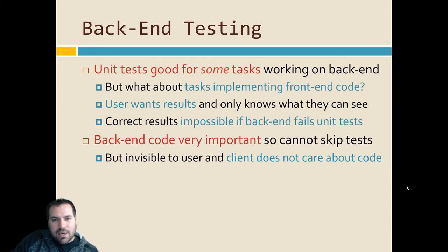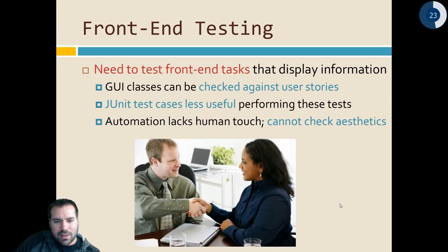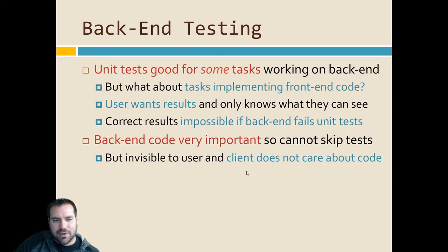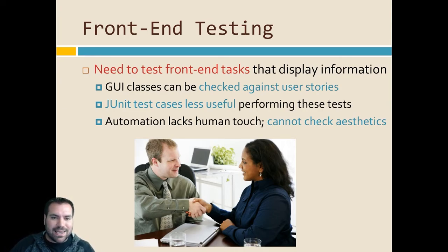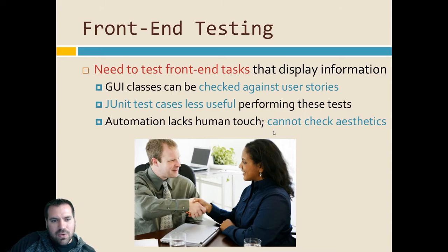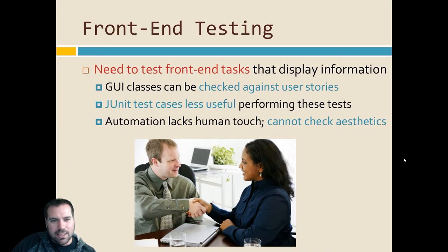Unit tests are great and that's what we've been talking about — great for back-end functionality. But what happens when we get to the front end and the client? The client is not going to care about your unit tests. So how do we write functionality tests for the front end that your user is going to care about? The back end might be tested and everything's good, but none of that matters if the user can't see it on the GUI.